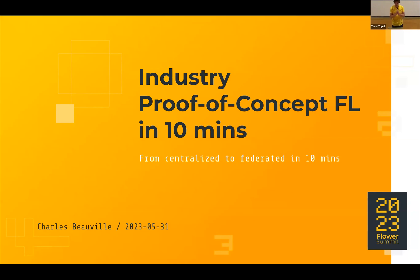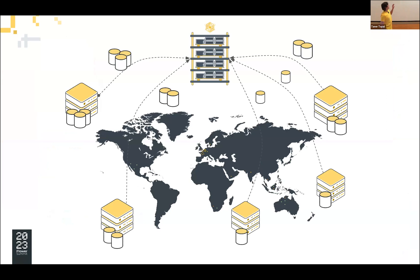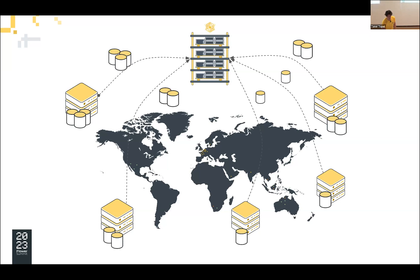I don't have too much time to lose, so let's get started. I think we can skip the introduction. I'm working for Flower Labs and I'm a student at EPFL in Switzerland. What I'm going to show is how to go from a scenario where you have multiple servers around the world distributed, and each server holds data and has to send data to a central server in order to run a training task. We will transform this into a federated learning setting where each client keeps its data, trains locally, and then only sends the weights back to the server.